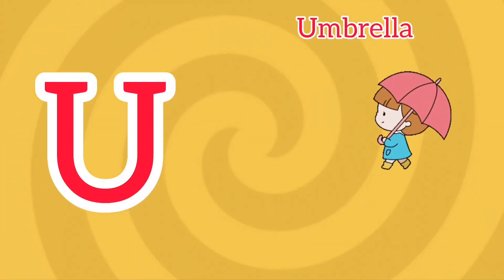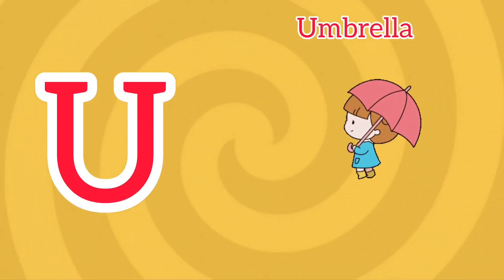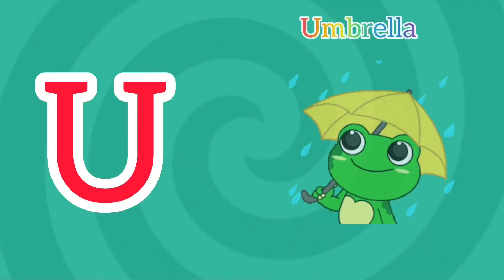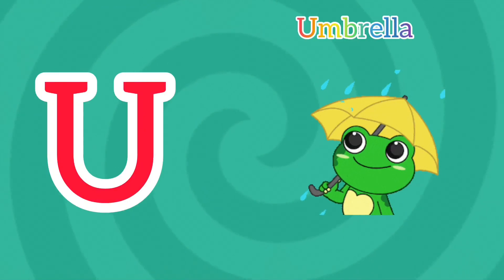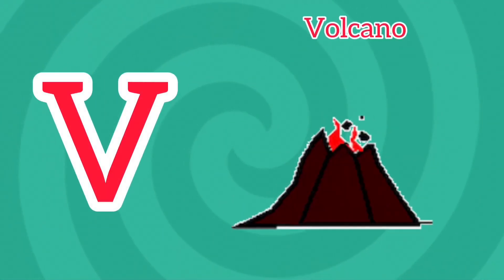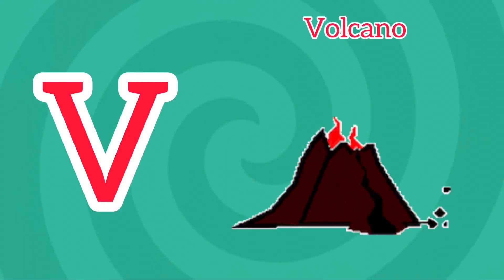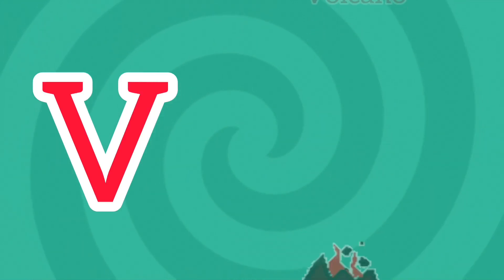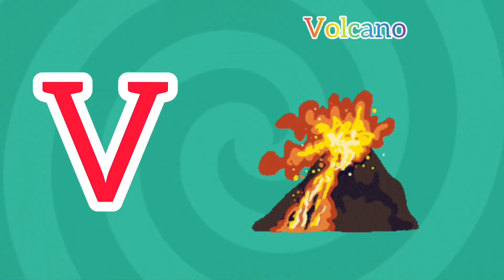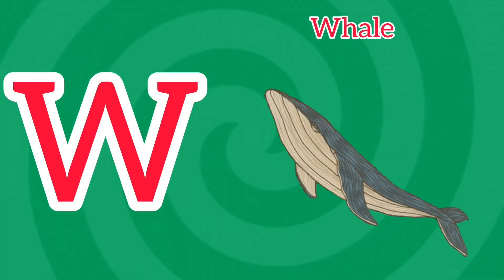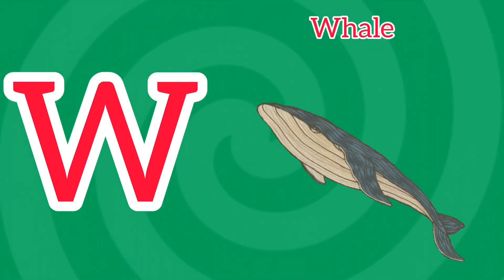U is for Umbrella. U, U, Umbrella. U is for Umbrella. U, U. V is for Volcano. V, V, Volcano. V is for Volcano. V, V.